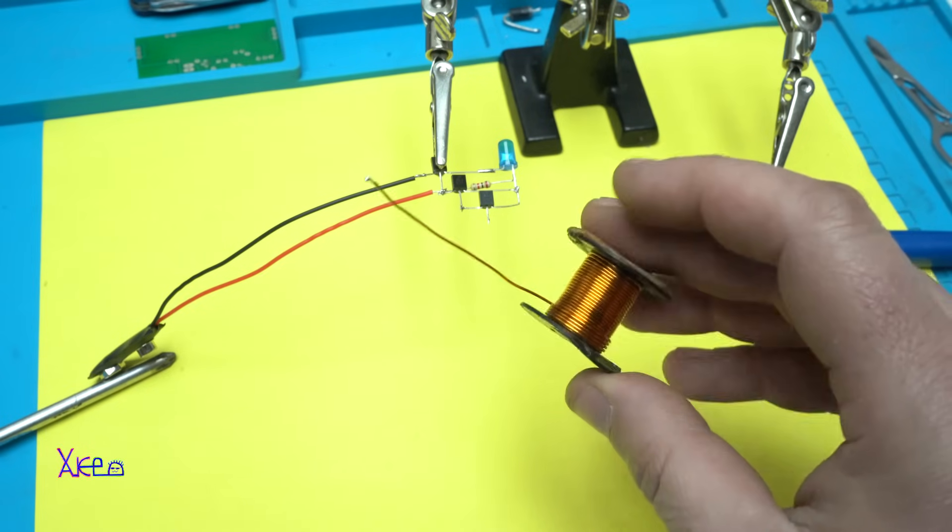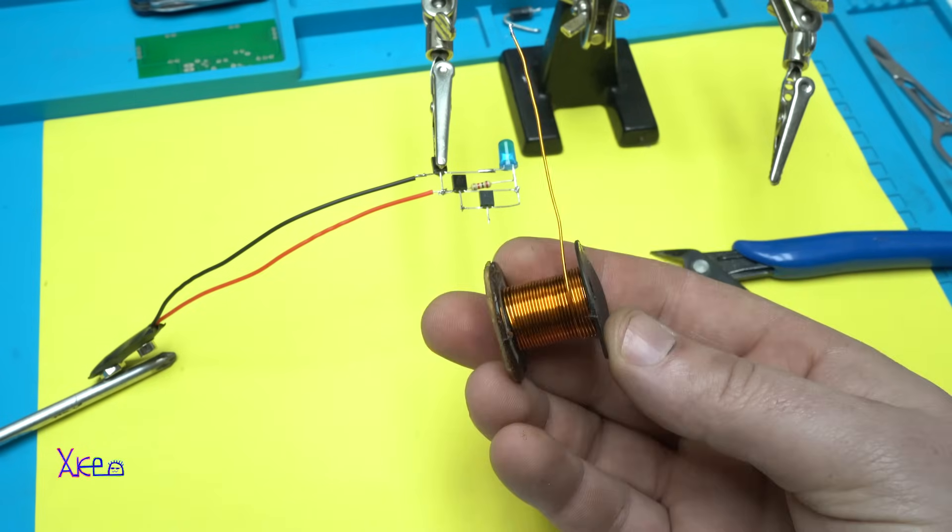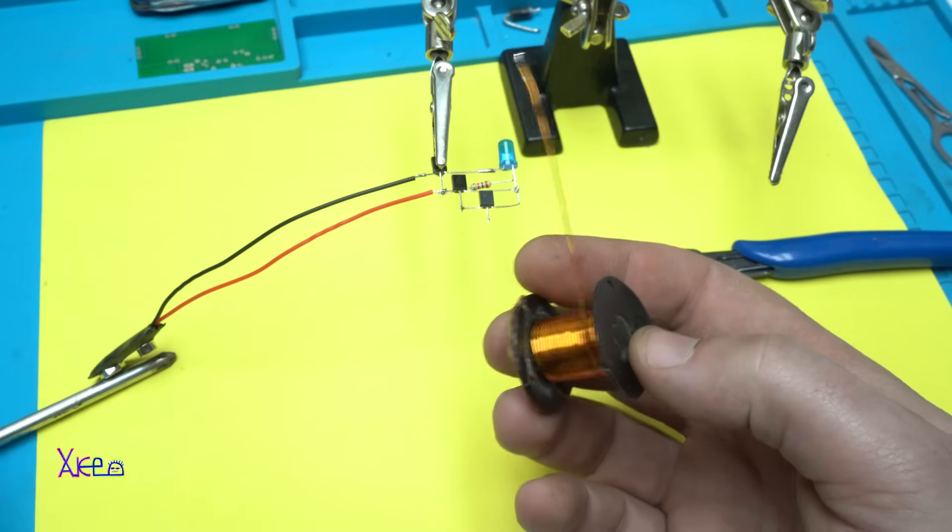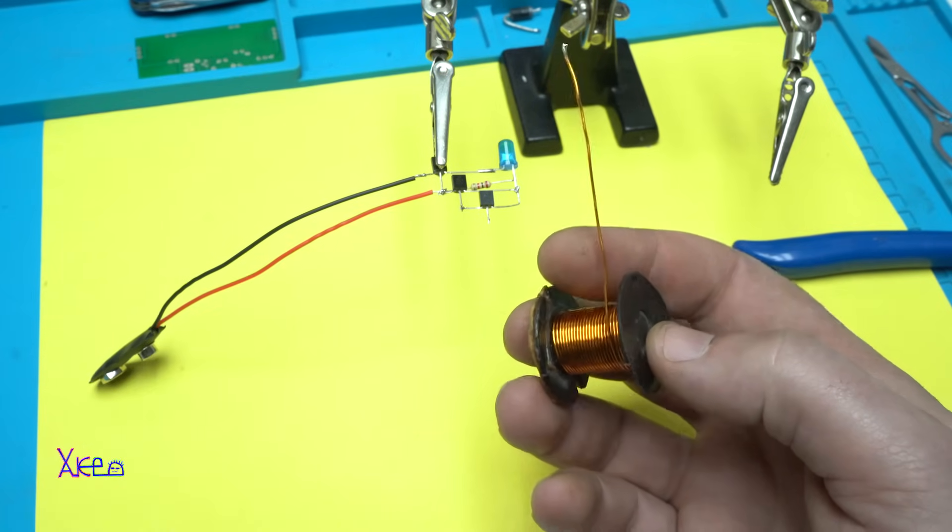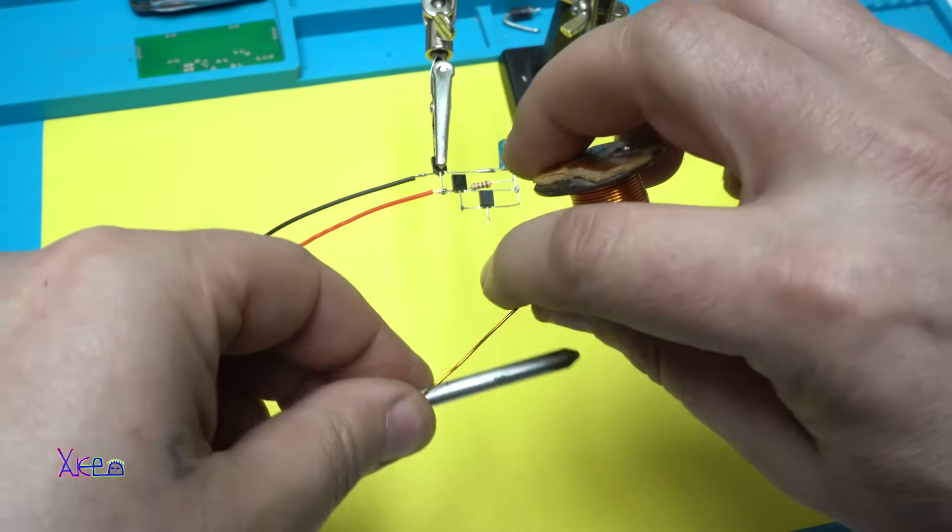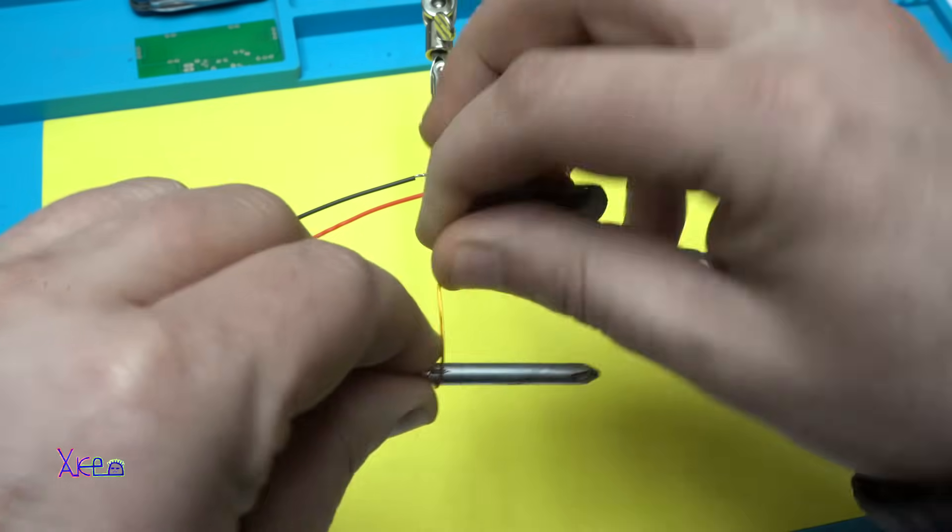You can use any kind of solid copper wire. The diameter is not that important. On the screwdriver I'm gonna wind a couple of loops.